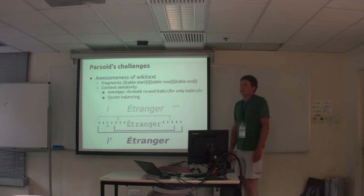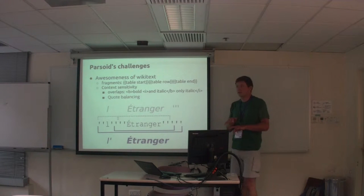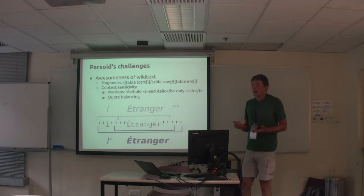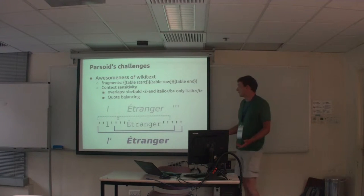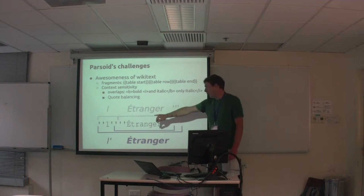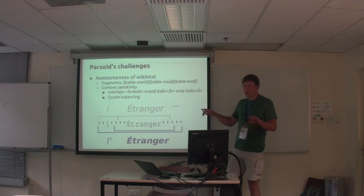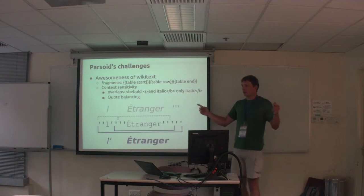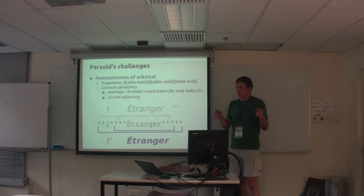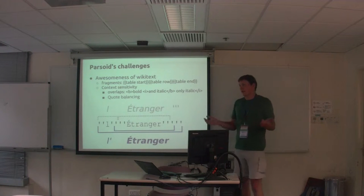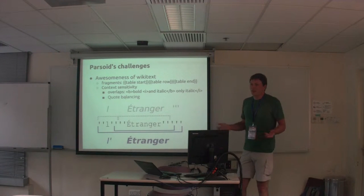Another challenge is context sensitivity in wiki tags. A simple example is overlapping tags that have to be resolved in a sensible manner — for that you need access to a random-access stack so you can look at nesting levels and do a minimal fix-up. There's also quote balancing: these quotes are used for italic and bold, where bold is three quotes and italic is two. They don't match up as pairs at the end of a line, so there's a complex heuristic that tries to determine if these quotes can be converted back to pure tags — an arbitrary heuristic that's just grown over time. It requires access to stacks and is context sensitive, which means we can't use a context-free grammar to parse this.